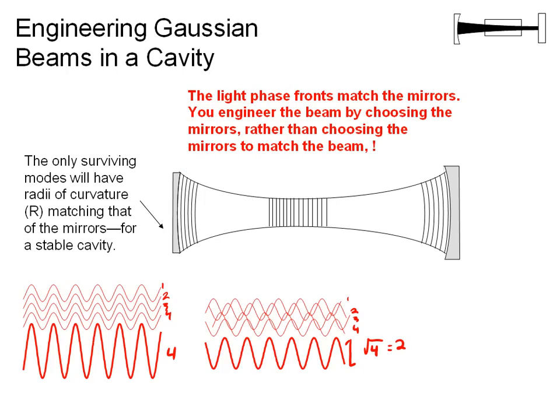The light phase fronts are forced to match the mirrors. From an engineering point of view, you engineer the beam by choosing the mirrors, rather than choosing mirrors to match the beam. And so this is the first of our design constraints for a laser. We can create any type of Gaussian beam inside the cavity by picking the radius of curvature of these mirrors.